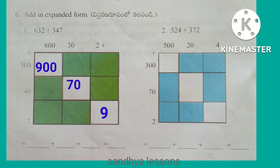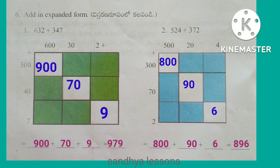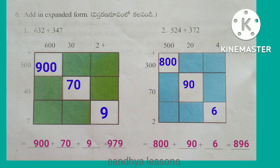Problem 6: Add in expanded form. First problem: 632 plus 347. Expanded form of 632 is 600 plus 30 plus 2. Expanded form of 347 is 300 plus 40 plus 7. After adding, we get 900 plus 70 plus 9, that is equal to 979. So 632 plus 347 equals 979.